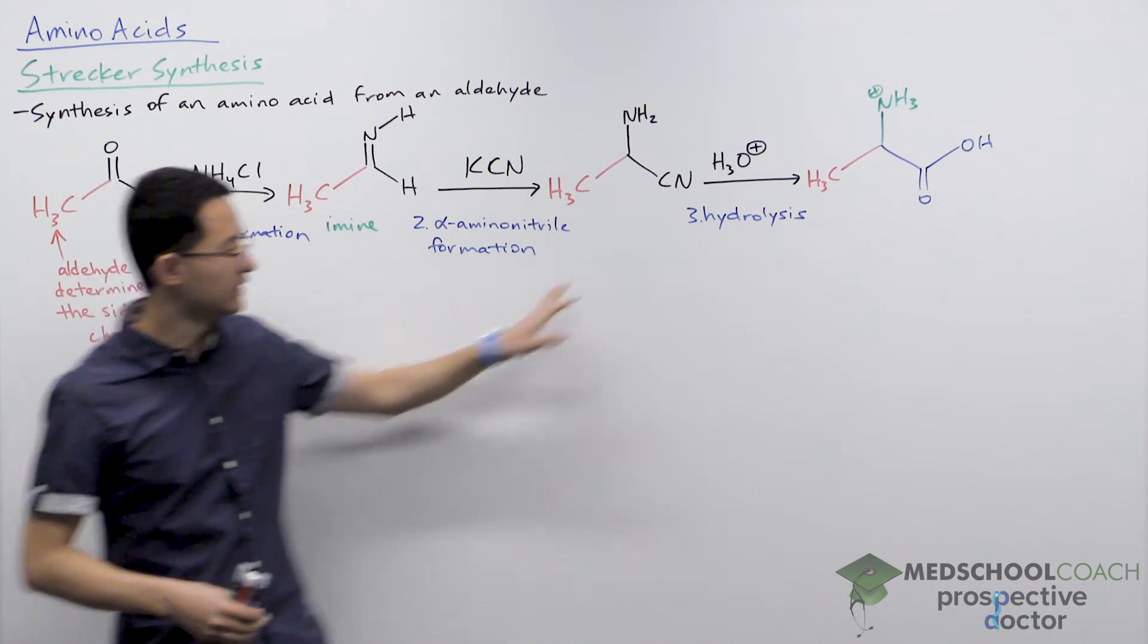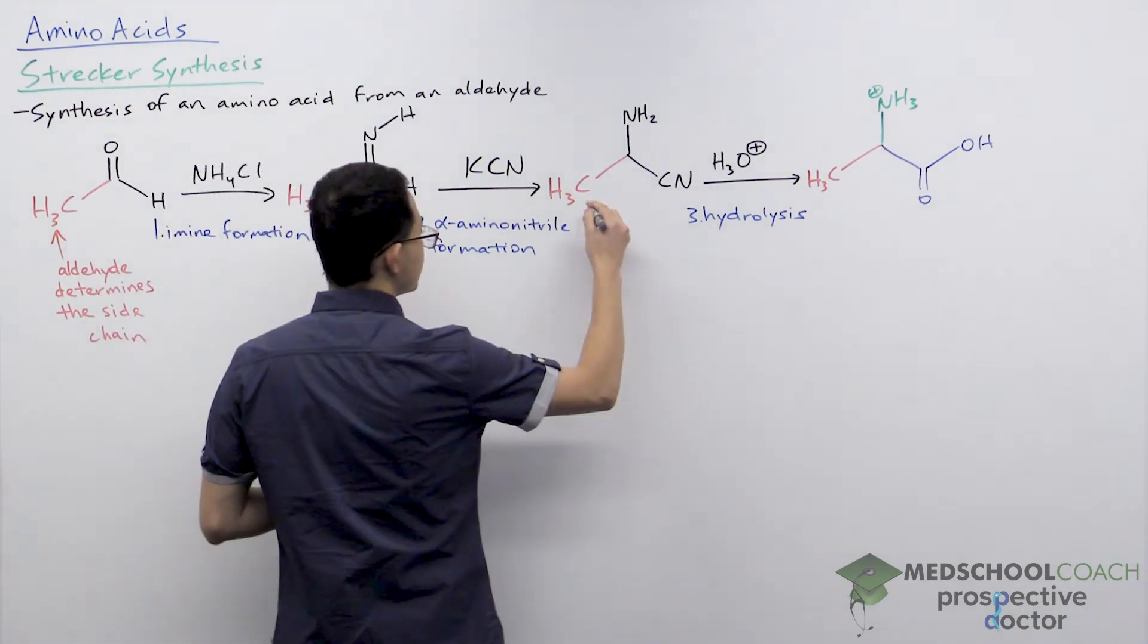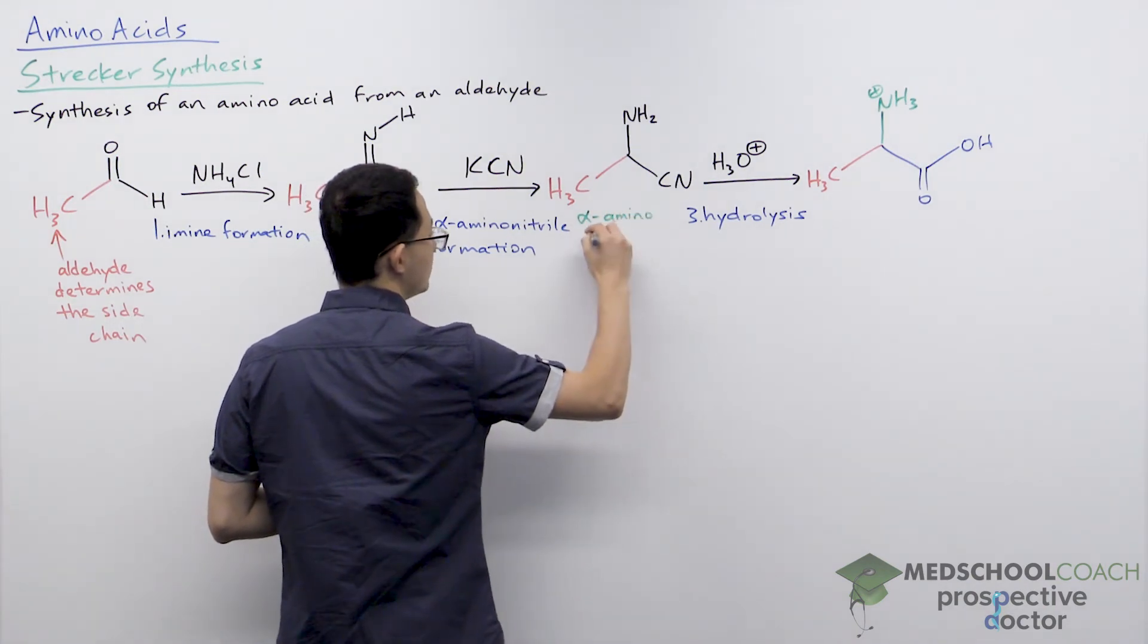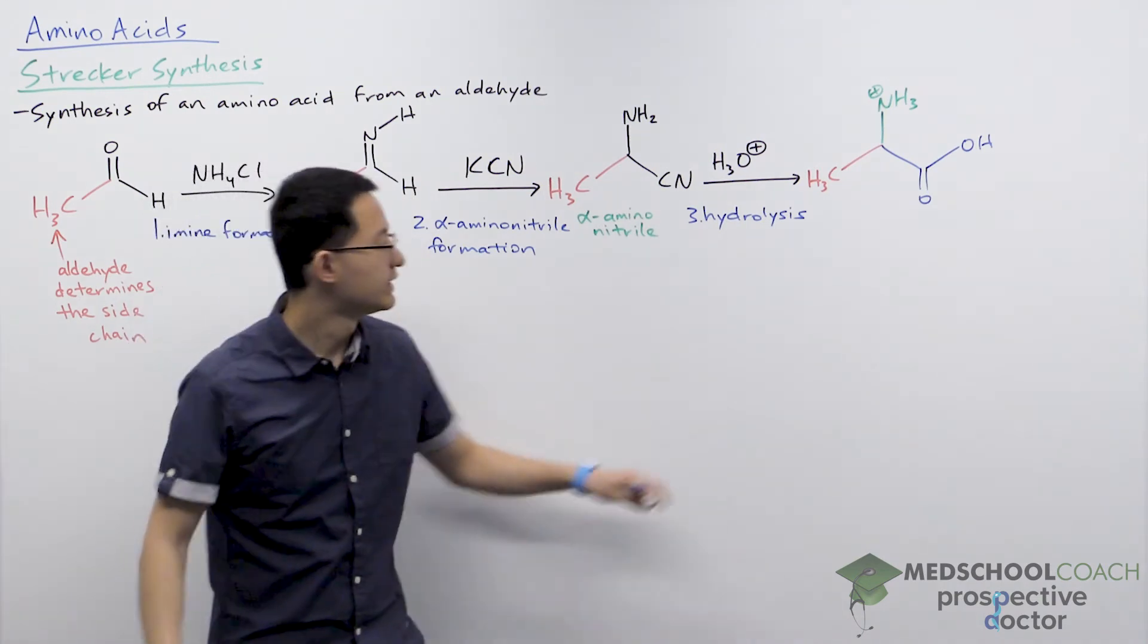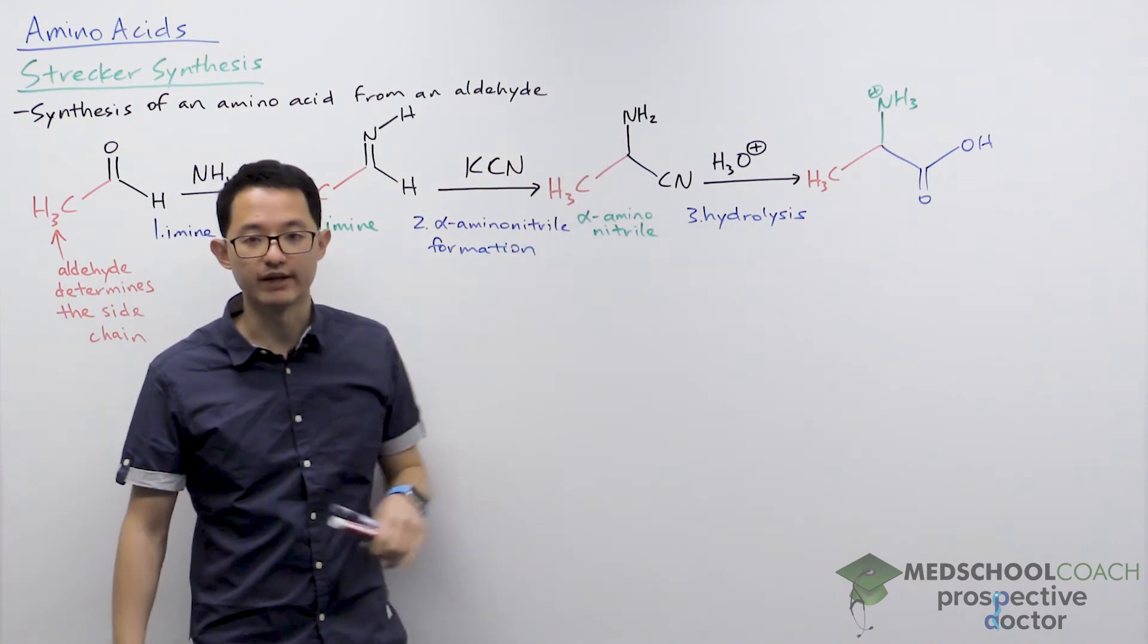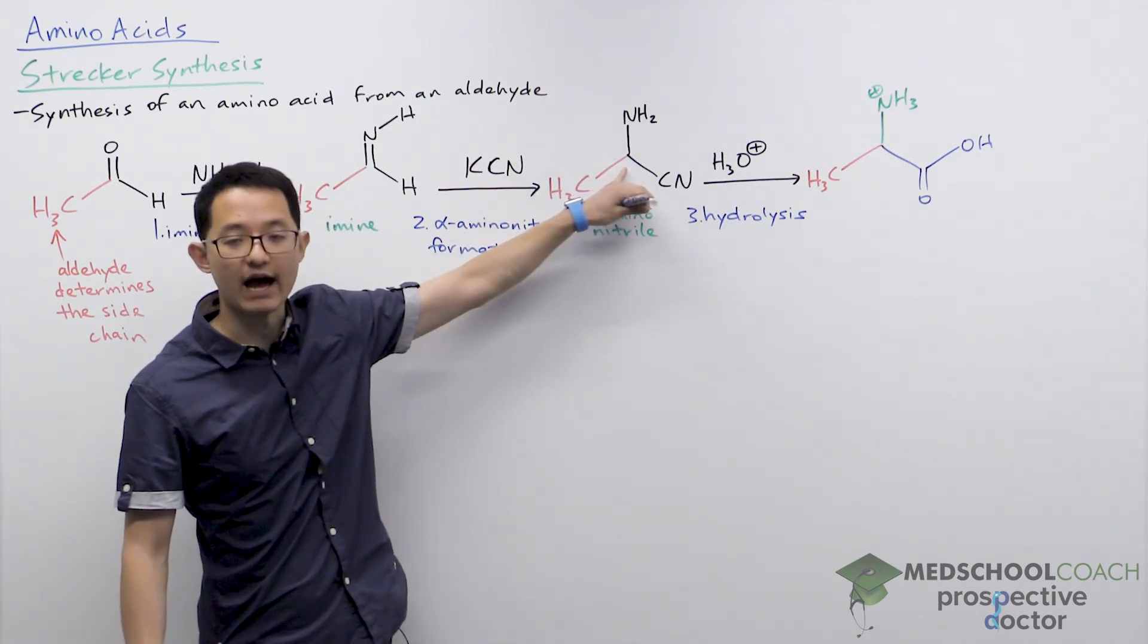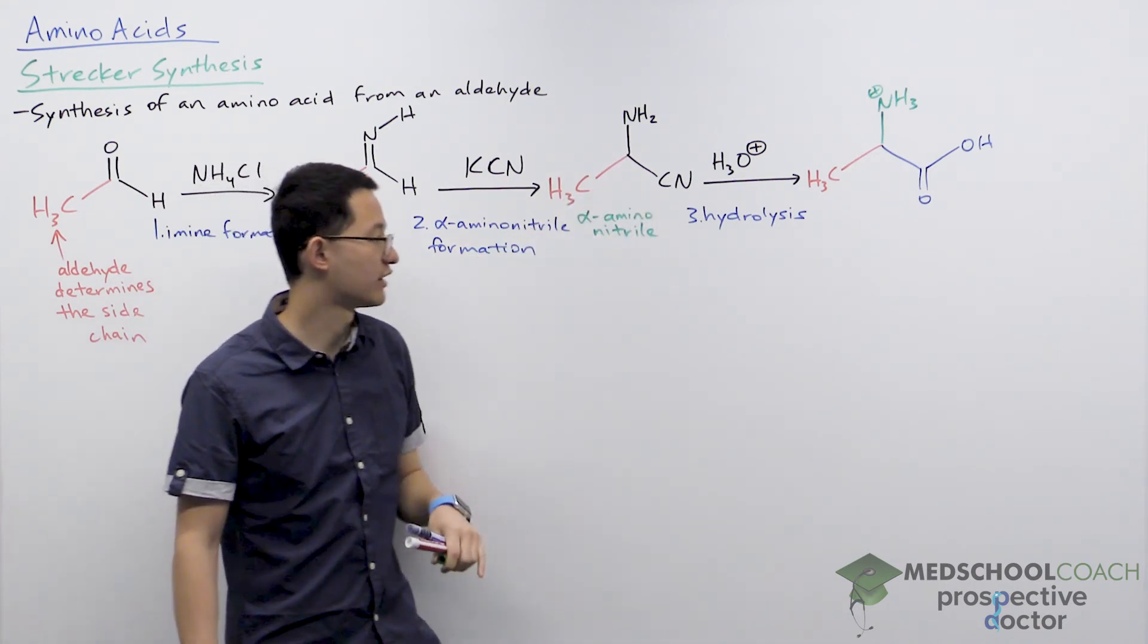This will result in the alpha-aminonitrile. In the alpha-aminonitrile, we can see here why it's called the alpha-aminonitrile. The CN group is a nitrile group and the amino group is this NH2 group right here. And we can see here that they're both on this alpha carbon. So alpha-aminonitrile.